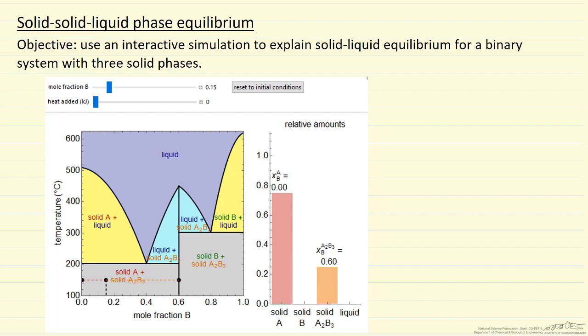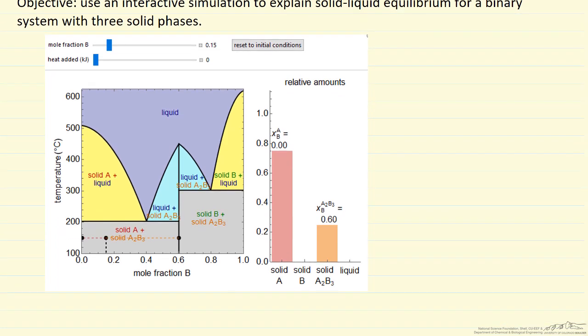Here I'm going to describe a phase diagram where we can have two solids in equilibrium with a liquid phase. This is a hypothetical system with components A and B, and what we're plotting on the left side is the temperature versus mole fraction. Let's move up a little bit to make it easier to look at this phase diagram. On the right side, we have the amounts of each phase that are present.